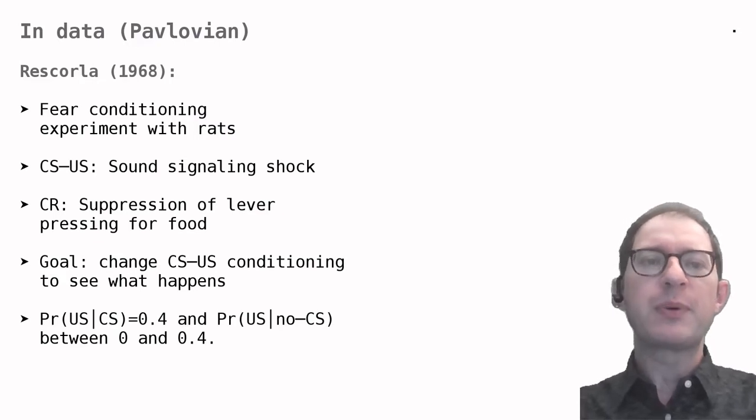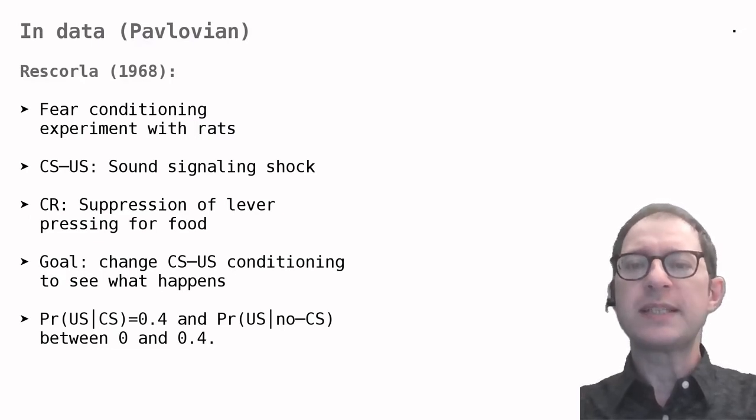In all 4, the probability of the US after the CS was 0.4. That means that rats were shocked 40% of the time after the sound. The probability of a shock coming unannounced by the sound varied between 0 and 0.4 across the 4 groups. So for some rats, the shock was always signaled by the CS, while for others, shocks occurred also without the CS.